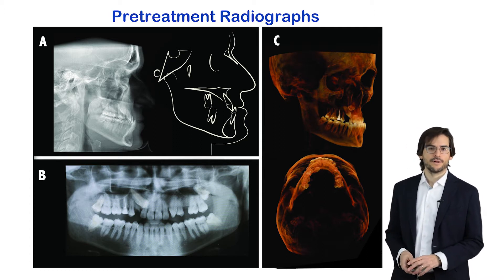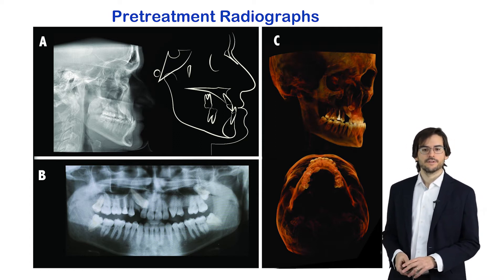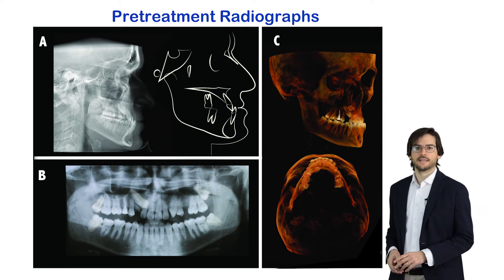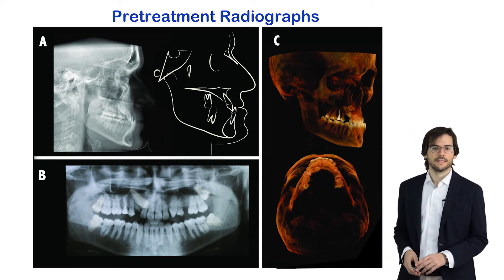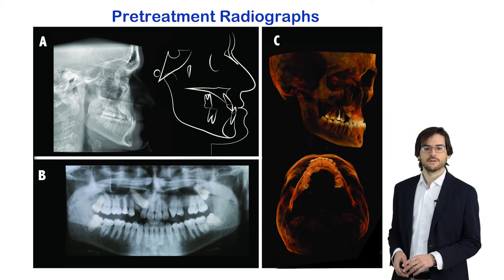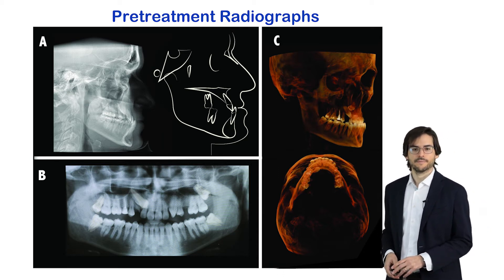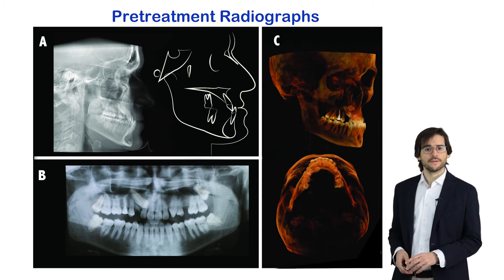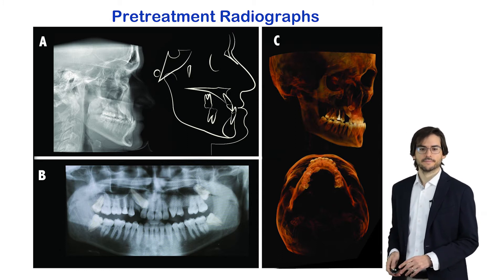A panoramic radiograph showed an impacted maxillary right canine and the absence of the second premolar. Both left third molars were also impacted.